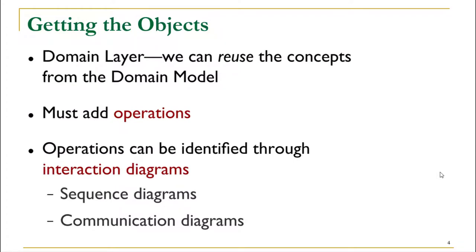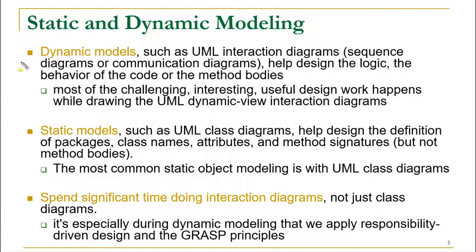Since we already have the domain model, we can reuse the concepts from it to identify candidate classes. All we need to do is add operations to those concepts, and once we add the operations we are close to getting our classes. To identify the operations we can take help from sequence or communication diagrams. The combination of the domain model and sequence diagrams will give us complete input for creating our class diagram.